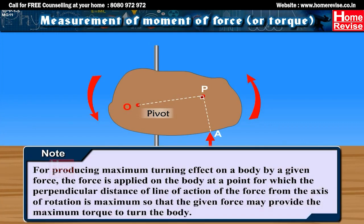Note: For producing maximum turning effect on a body by a given force, the force is applied on the body at a point for which the perpendicular distance of the line of action of the force from the axis of rotation is maximum, so that the given force may provide the maximum torque to turn the body.